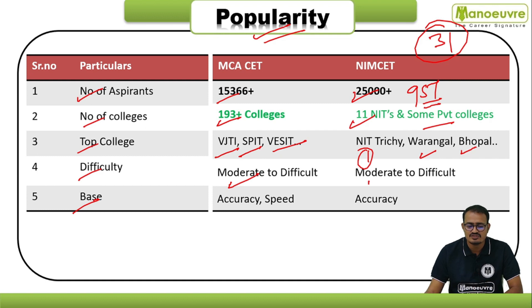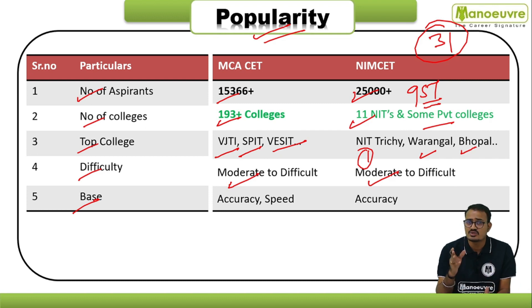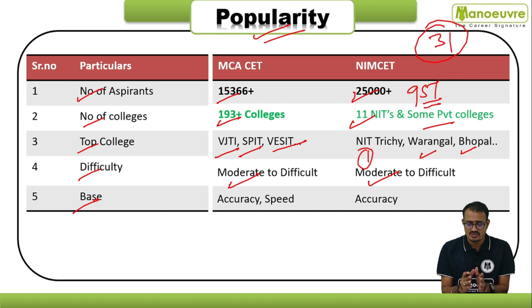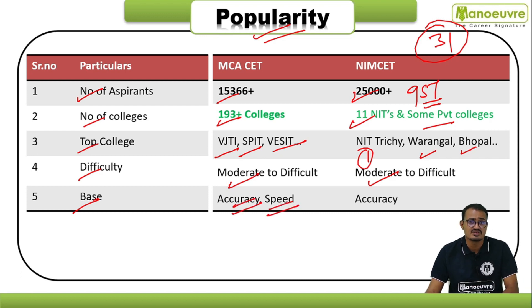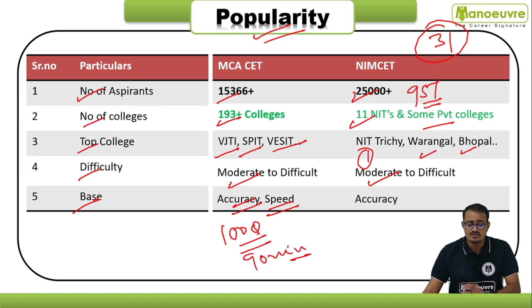In terms of difficulty level, both MCA CET and NIMCET are moderate to difficult. The sections in both exams are similar, so if you are preparing for MCA CET you can also attempt NIMCET, and vice versa. You need to know which entrance exam is held first and which comes later. For MCA CET, you must develop accuracy and speed as you have to solve around 100 questions in only 90 minutes.